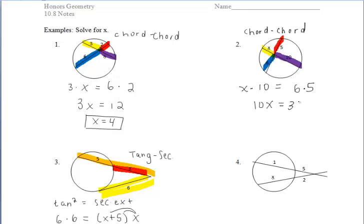For number 2, we should be thinking about the chord-chord power theorem again. And we should have an equation set up like this. You should get that x has a value of 3.